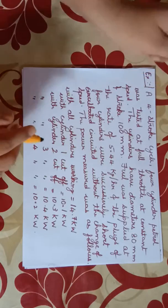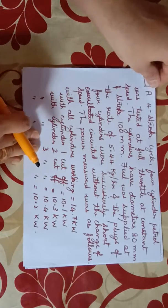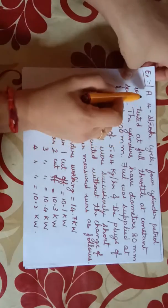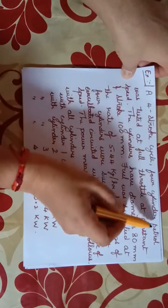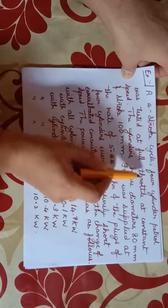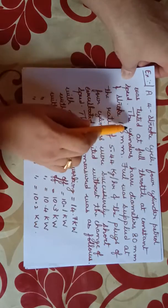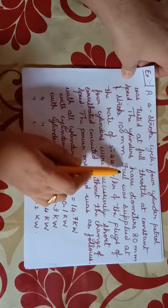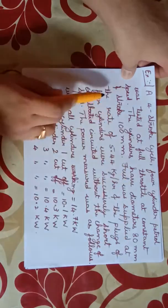Hello friends, welcome to my channel. This video deals with another problem on heat balance sheet. The question is: a four-stroke cycle, four-cylinder petrol engine was tested at full load throttle at constant speed. The cylinders have diameter 80 mm and stroke 100 mm. Fuel was supplied at the rate of 5.44 kg per hour.